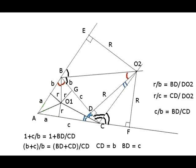If G and D are points of tangency of the incircle and excircle respectively to side BC of triangle ABC, then based on the equal angles, triangles BO1G and BO2D are similar, as are triangles CO1G and CO2D. The proportions between side lengths of these similar triangles show that the distances of tangency point D from vertices B and C are the same as distances of tangency point G from B and C, only reversed. The distance between C and D equals small letter b, and the distance between B and D equals small letter c.